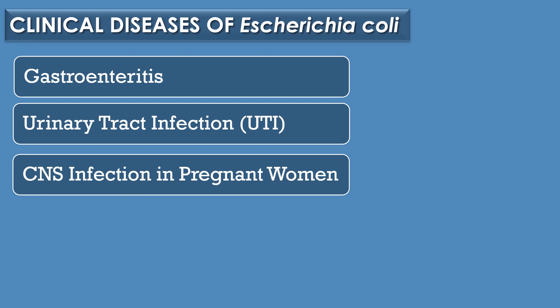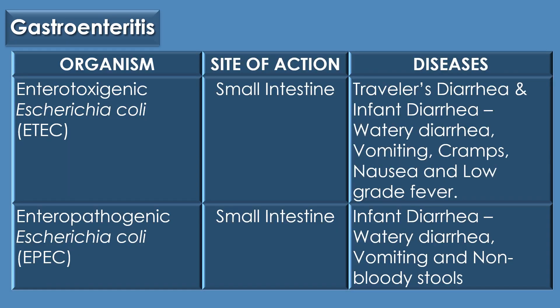E. coli results in three clinical diseases: gastroenteritis, urinary tract infection, and central nervous system infection in pregnant women. The first clinical disease is gastroenteritis. The gastroenteritis caused by enterotoxigenic E. coli mainly affects the small intestine and results in traveller's diarrhea and infant diarrhea, with the symptoms of watery diarrhea, vomiting, cramps, nausea, and low-grade fever.